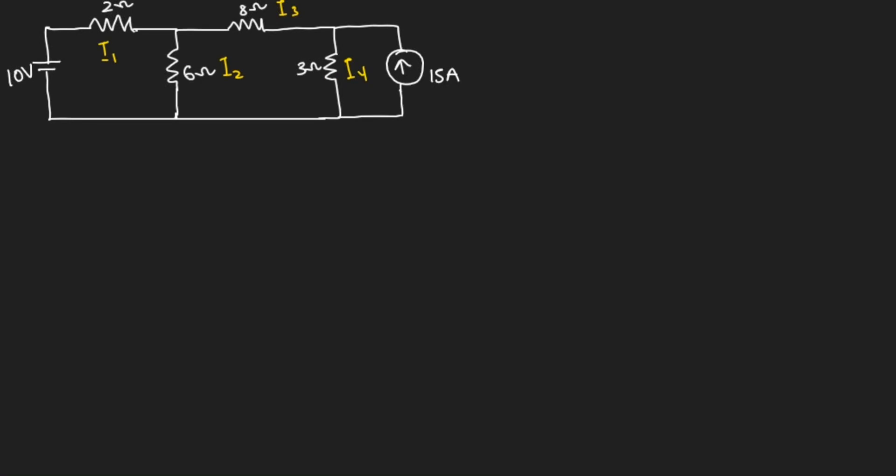Hello everyone, welcome to this lesson. In this video, we are going to solve this question. The question says we should use superposition's theorem to find the current values I1, I2, I3, and I4. So we have two power sources here, which is the 10V voltage source and the 15A current source.